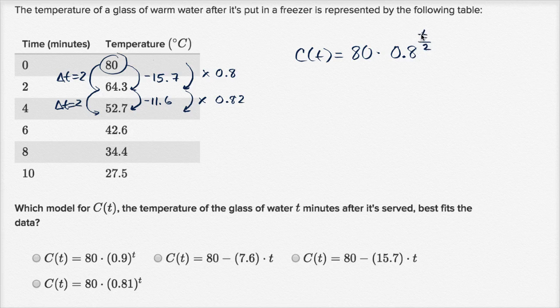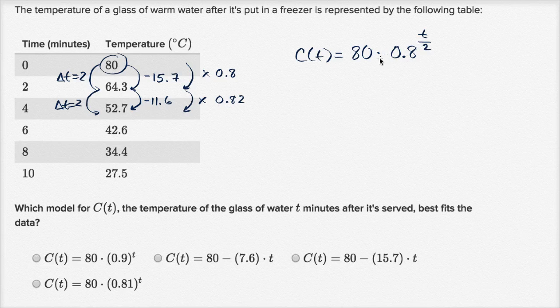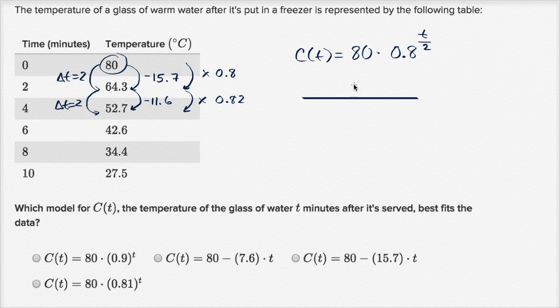So the real way to describe this would be T over two. Every two minutes, when T is zero, we'd be at 80. After two minutes, we would take 80 times 0.8, which is what we got over here. After four minutes, it would be 80 times 0.8 squared. Let's just verify that we feel pretty good about this.